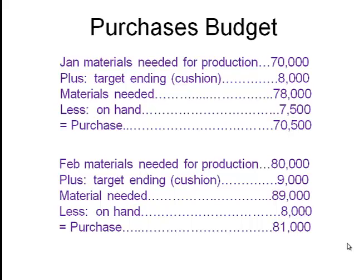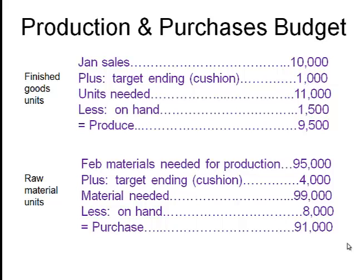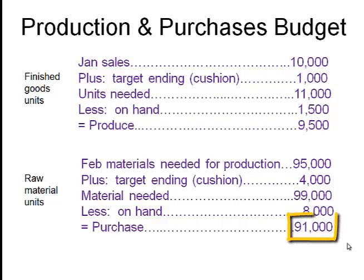They are not the same — one's a TV and one's a screen; one's a roller skate and one's shoelaces. So let's contrast the production and material purchases budget. The production budget is in finished good units — for example, in January we're going to sell 10,000 units, we need 1,000 extra, we already have some on hand, so we need to produce 9,500 finished good units. Now, how many raw materials will you need to produce 9,500 finished good units? That will be a multiple — four wheels for each roller skate, three circuit boards for each cell phone, four feet of wire for each radio. Then figure out your cushion, less what you already have, and that's how many raw material units you need to purchase.